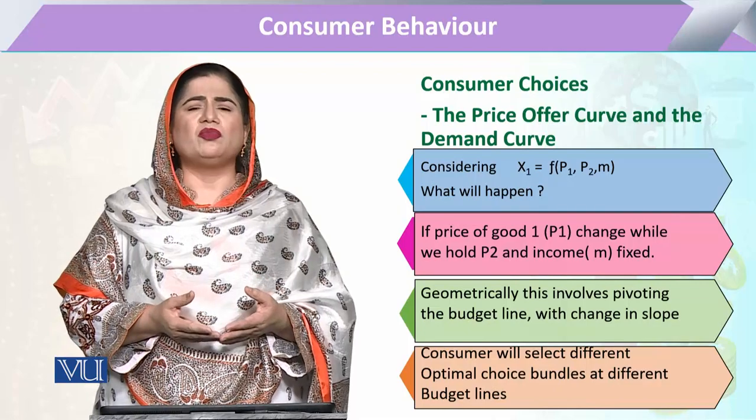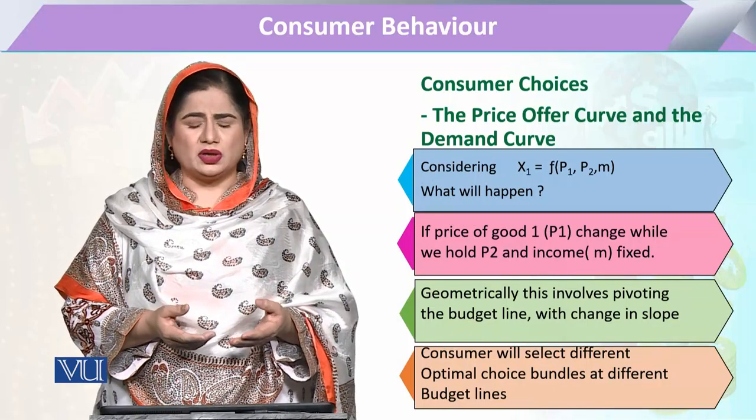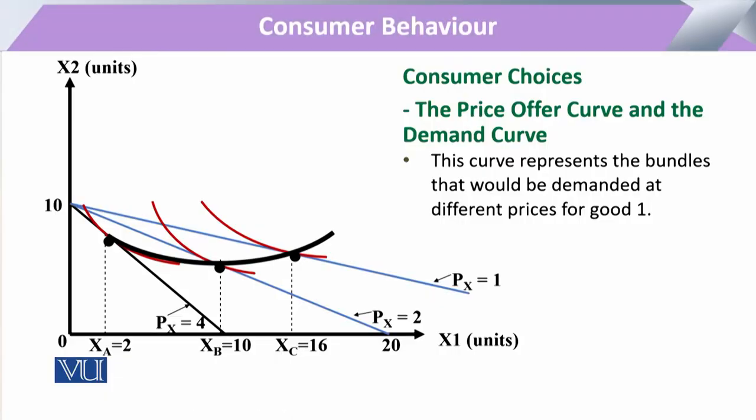The joining of all the optimal choice bundles that occur due to the change in price gives us the price consumption curve, which can also be called the price offer curve.